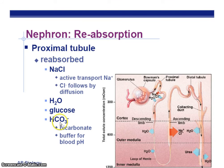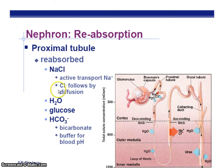You should know how each one of these is reabsorbed back into the bloodstream — active transport or diffusion — for sodium, chloride, salt, and water. Water is diffusion, a passive process. Sodium chloride is an active process that requires energy by the cell.